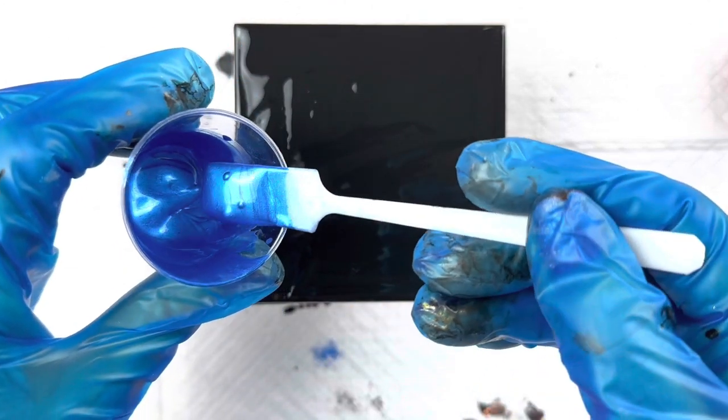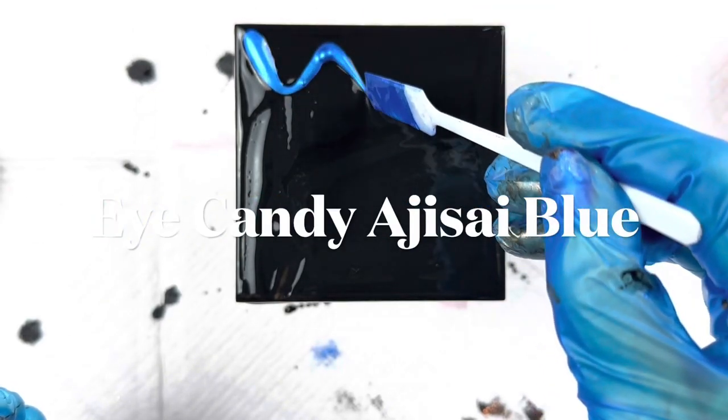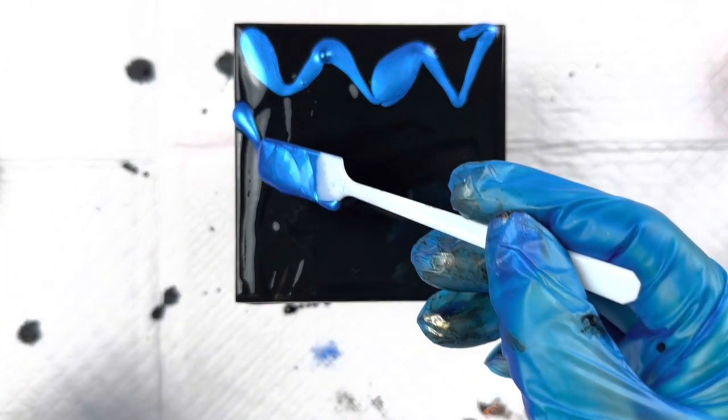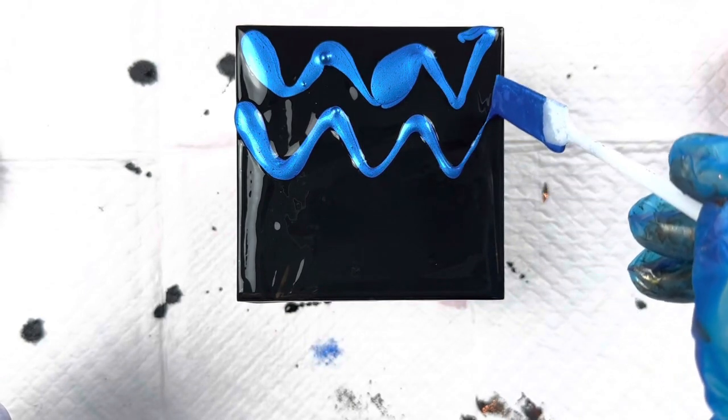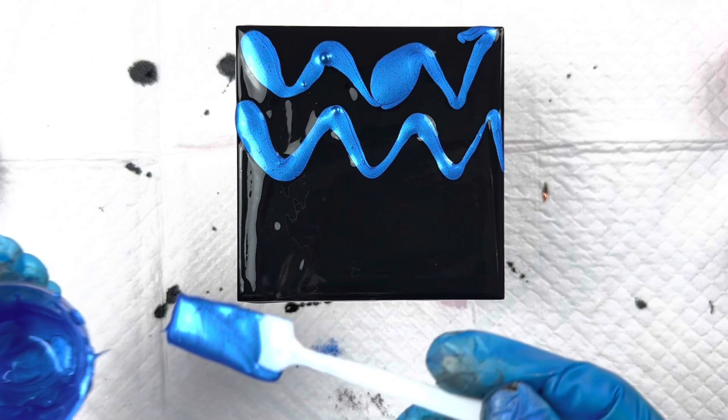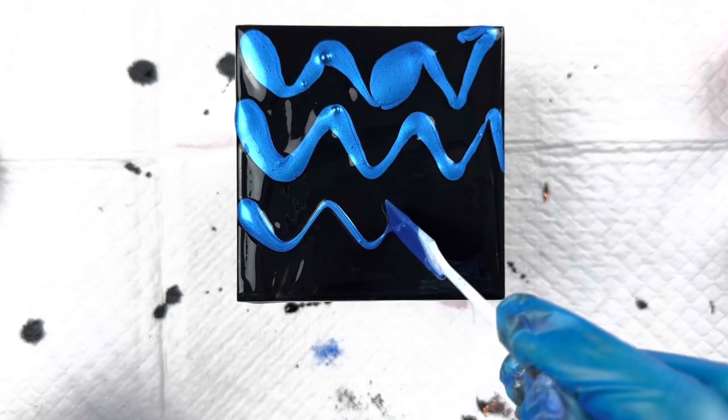Now I'm just going to drizzle these beautiful pigments on here. It's always easier if you've got a squeeze bottle, but I haven't got these in a squeeze bottle. I've just mixed them up into these little shot glasses, so I'm just going to spread them as best I can.